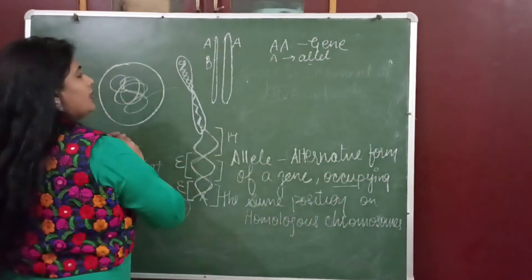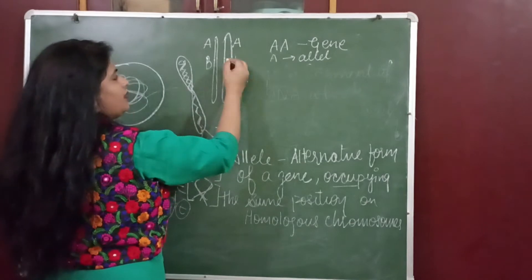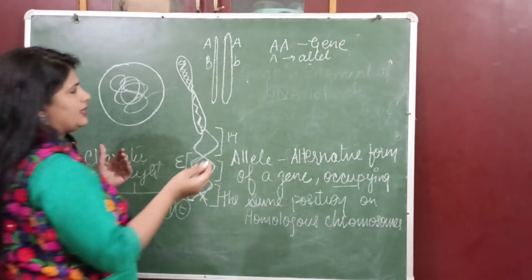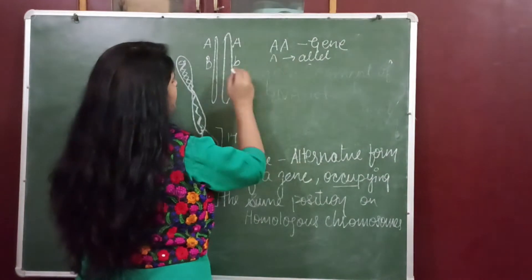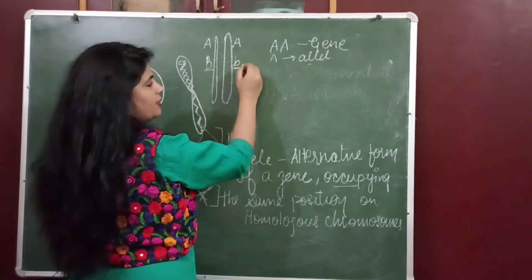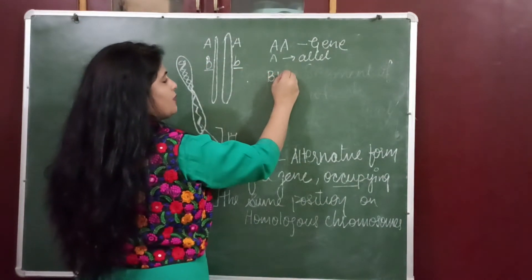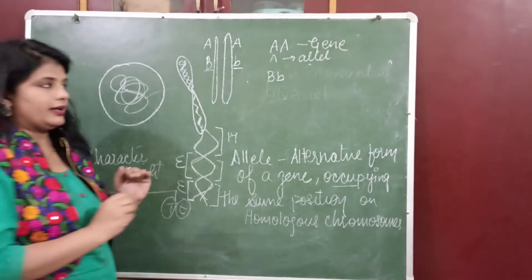So this is one of the allele, this is one of the allele. Capital B small b is the gene for hair color. This is a gene which consists of one dominant allele and one recessive allele. I hope it is clear.